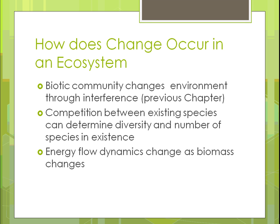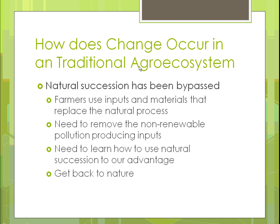How does change occur in an ecosystem? It's biotic — living — so there are changes to the environment through interferences. There's competition between existing species, like survival of the fittest, which helps determine which ones persist. The energy flows between the biomass change too. If you have herbivores eating the grasses, it's going to change that energy flow dynamic — it could be in a good or a bad way, depending on how you use it.